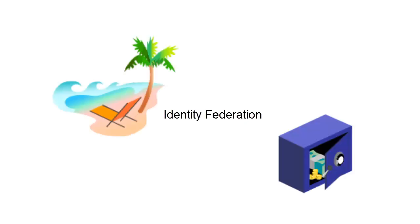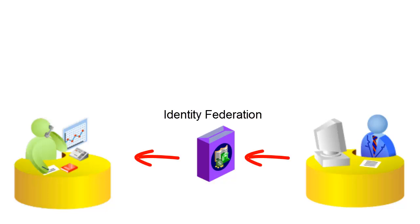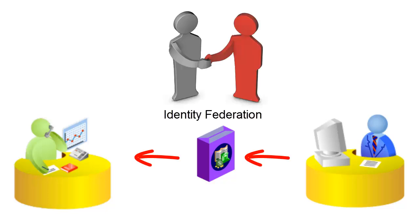Now let's talk about Identity Federation. Federation is establishing partnerships with various third-party applications or servers. As an employee, when you join your firm, you may also get access to set up your retirement account. This retirement account may be outsourced through a third-party service that specializes in retirement accounts. You can log into your firm's intranet and click on the benefits link, which can take you to the third-party website to access your retirement benefits without asking for your username and password, because there is already a partnership established between your firm and this financial firm.